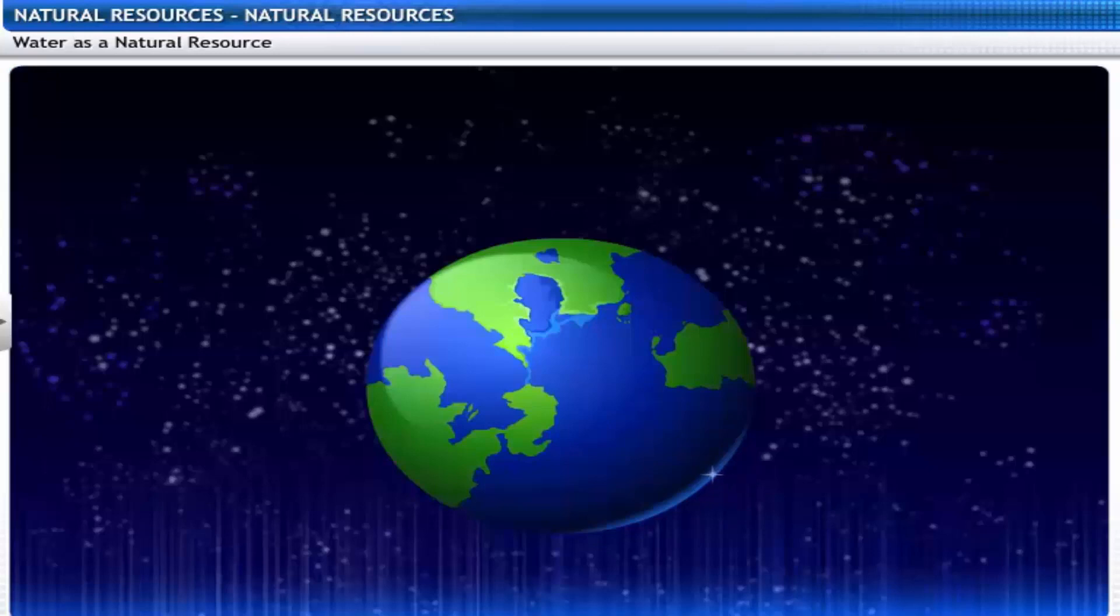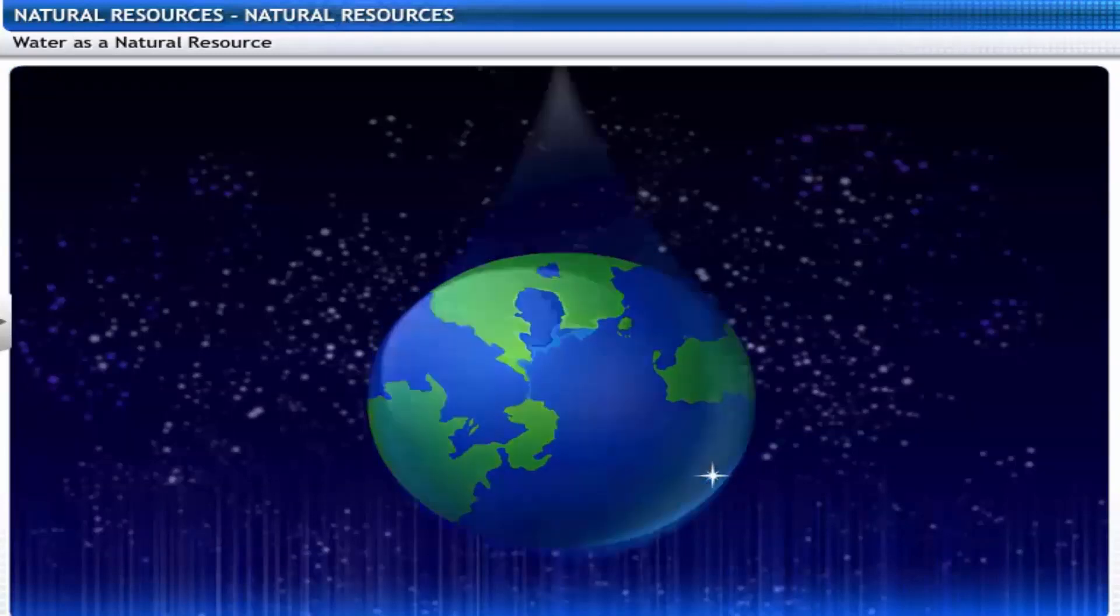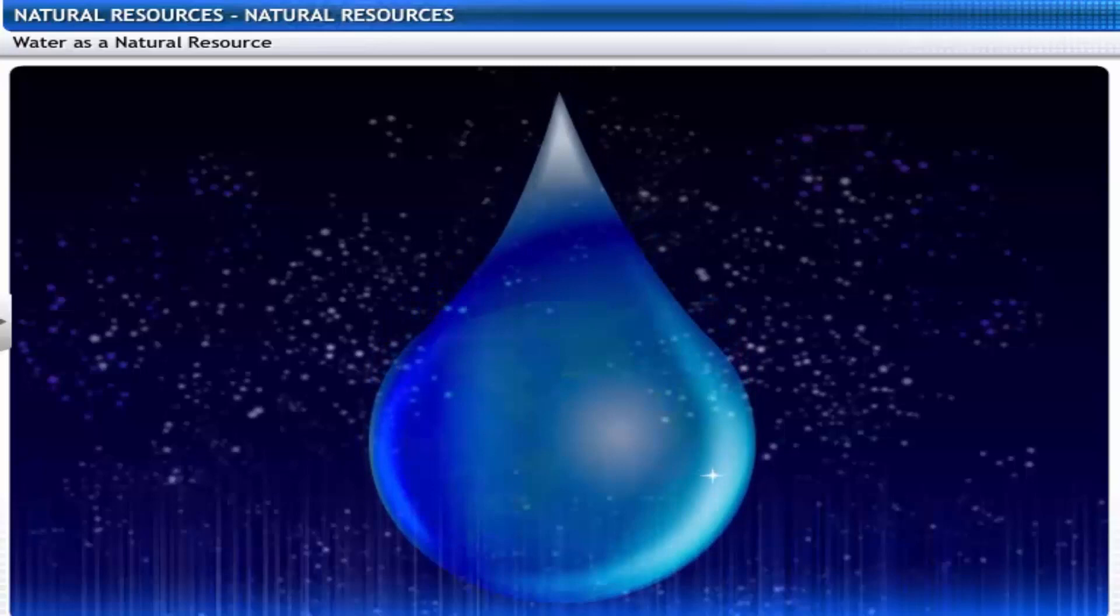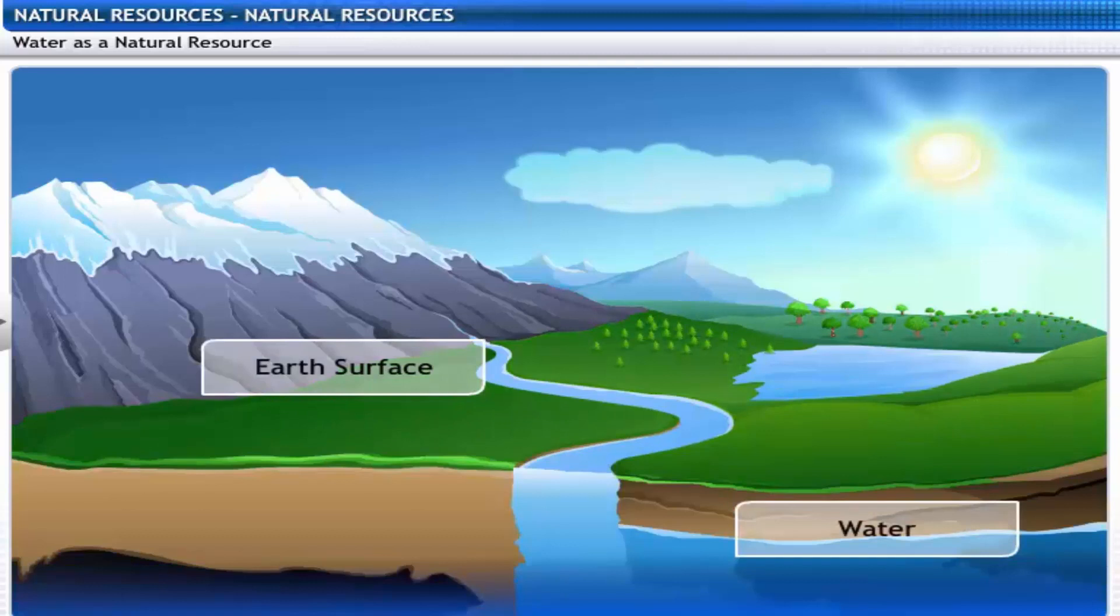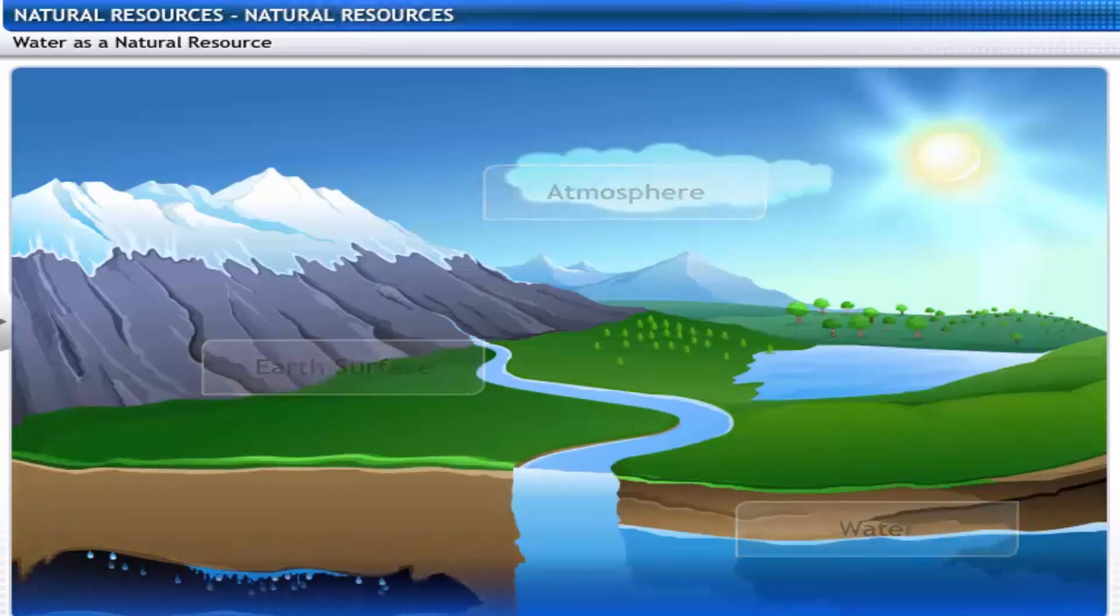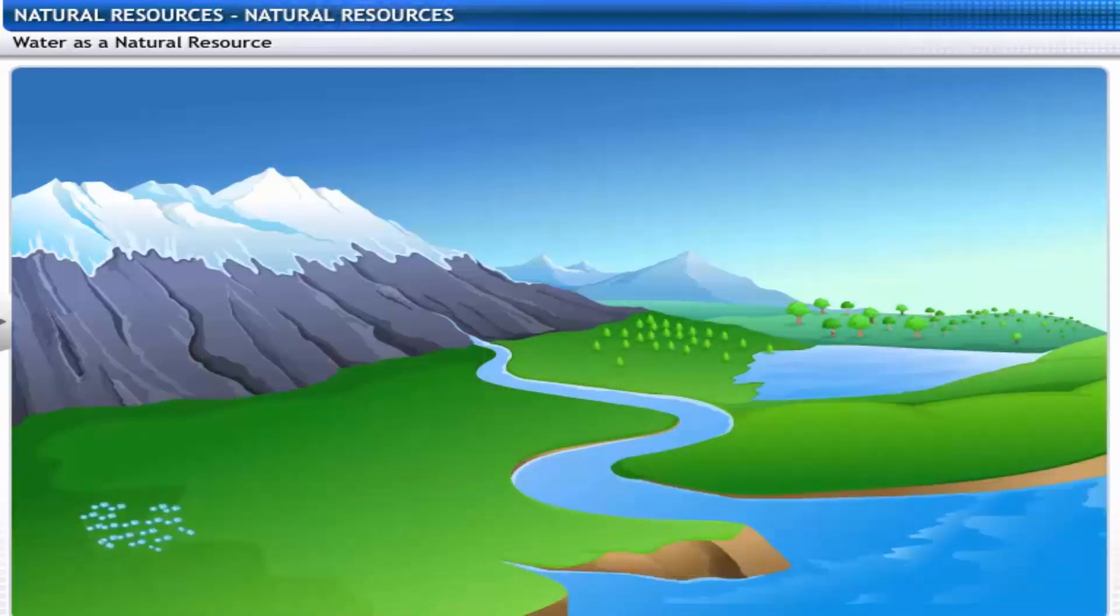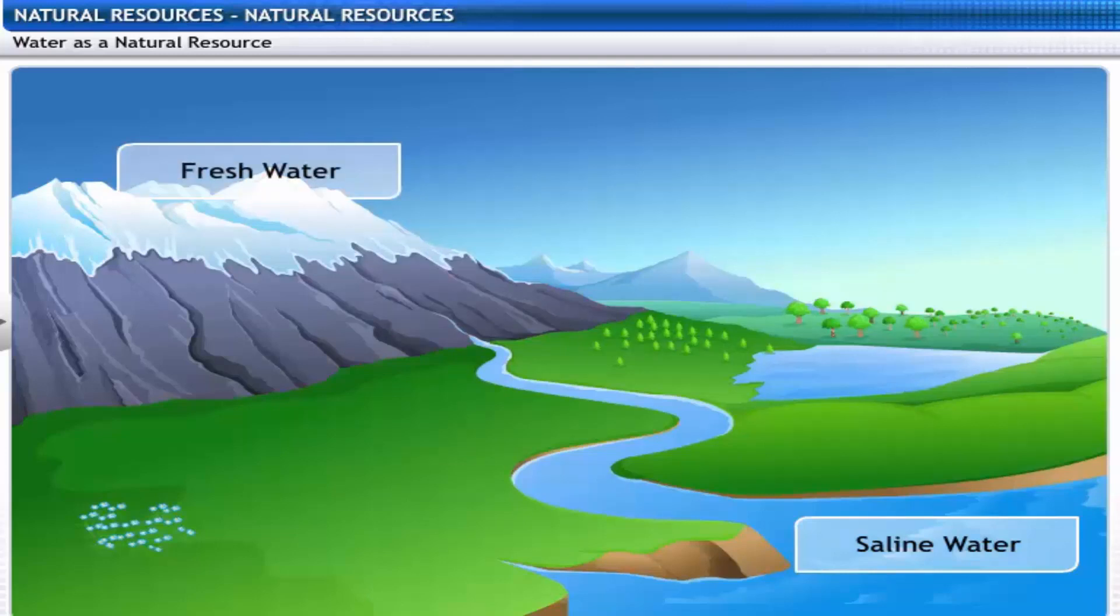Now, let us look at another natural resource, water. It is found on the Earth's surface, under the ground and in the atmosphere as water vapor. Most of the water on the Earth's surface, found in seas and oceans, is saline. Fresh water is found frozen at the two poles, on snow-covered mountains and in rivers and lakes.